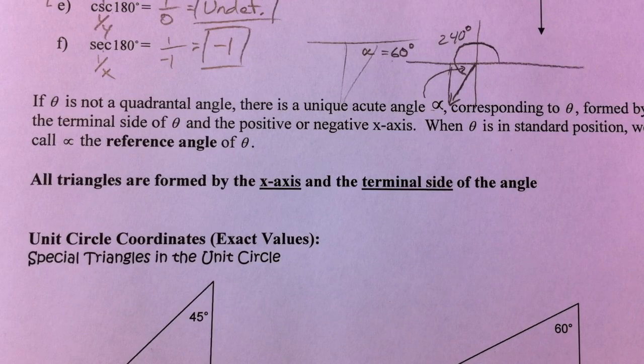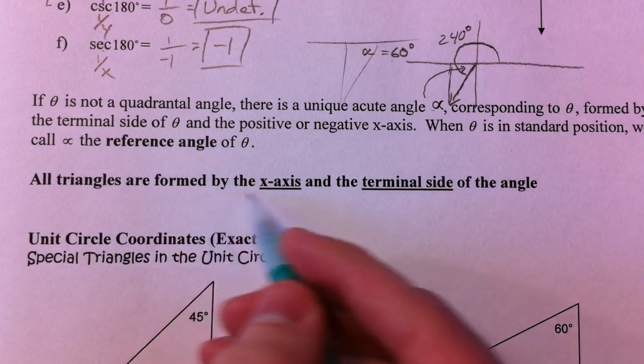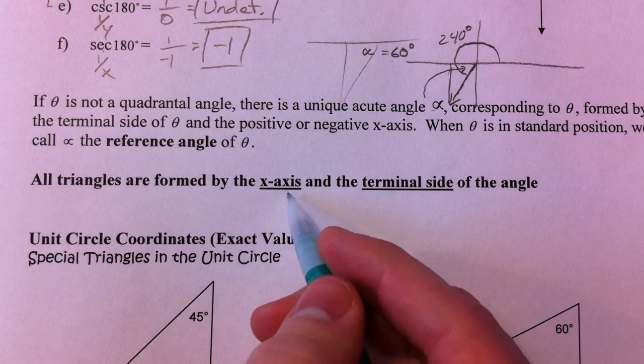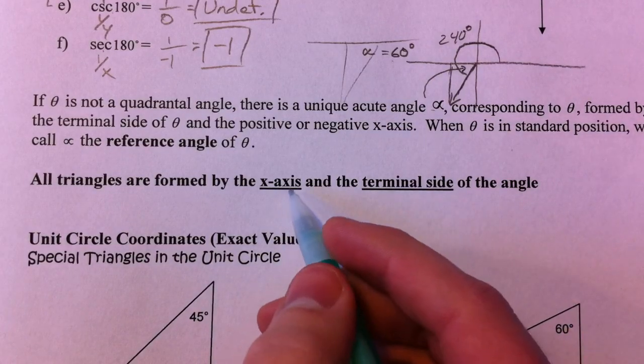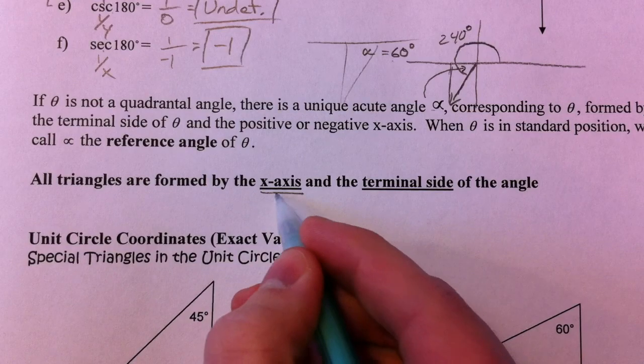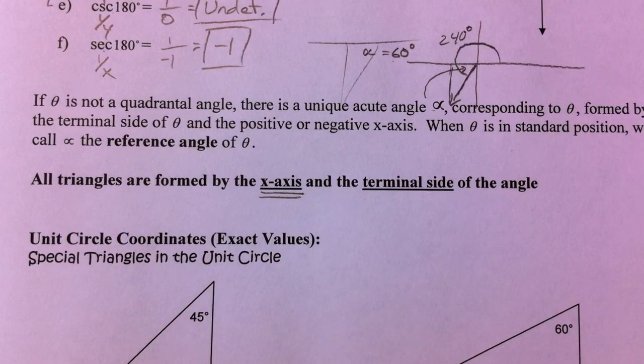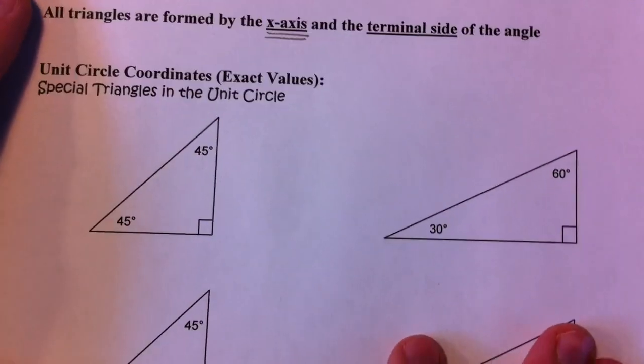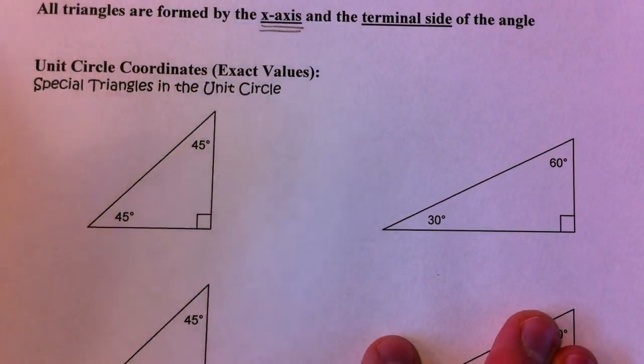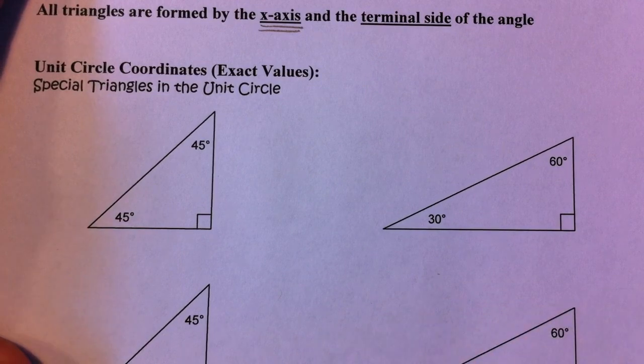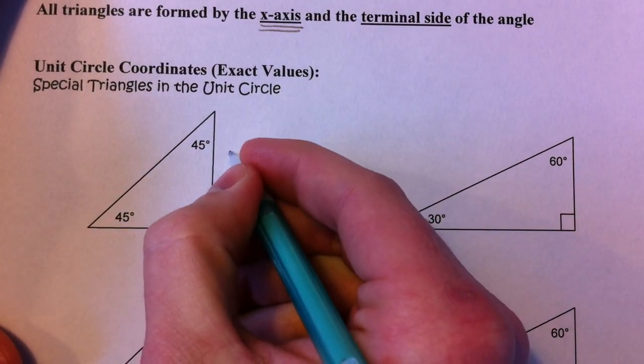The thing to keep in mind, though, is that all of your triangles are formed by the x-axis. All of them formed back to the x-axis. And that way, your sine and your cosine are always the same. Sine always deals with the y. Cosine always deals with the x. So we dealt with this last time.